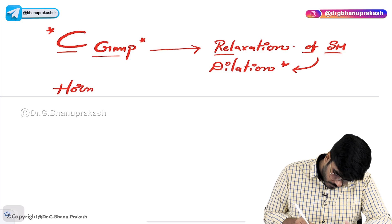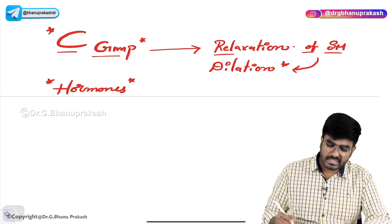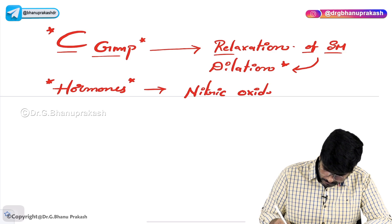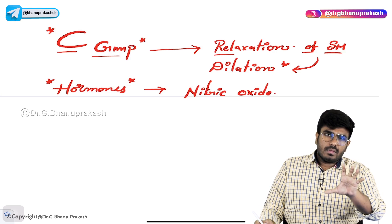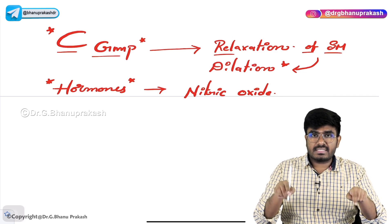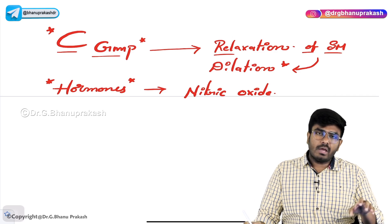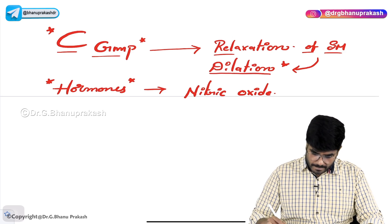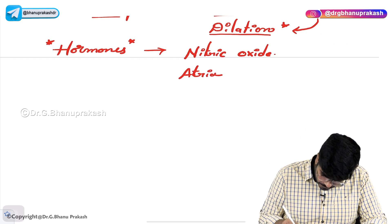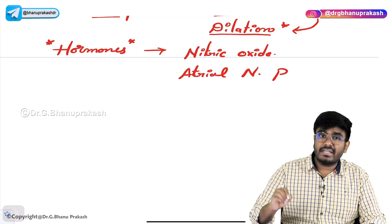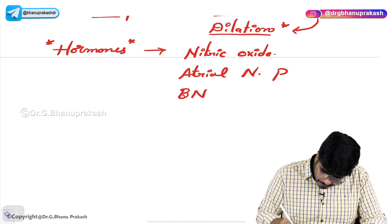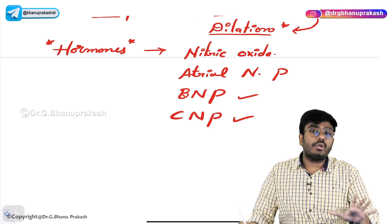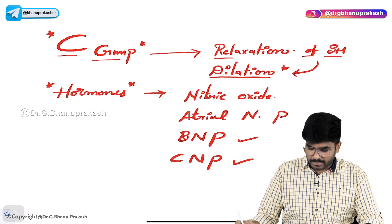What are the hormones which are increasing the cGMP levels inside the cell? One important hormone which you need to know is nitric oxide. Nitric oxide acts on its receptor. Whenever nitric oxide acts on the receptor inside the smooth muscle cell, cGMP levels are elevated, and as a secondary messenger it causes vasodilation. Other hormones like atrial natriuretic peptide (ANP), brain natriuretic peptide (BNP), and CNP — these different types of natriuretic peptides are also going to use cGMP as their secondary messengers.